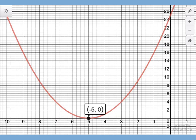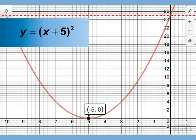This is the graph of this function, and as you can see, it intersects the x-axis at one point. This means that the quadratic can be written this way: y equals the quantity x plus 5 squared.